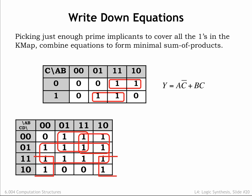Looking at the top table, we'll assemble the minimal sum-of-products expression by including the product terms for each of the shown implicants. The top implicant has the product term A and NOT-C, and the bottom implicant has the product term B and C. And we're done!